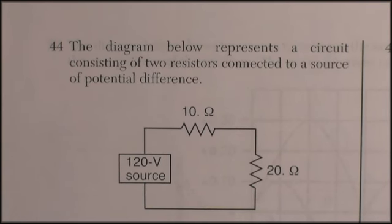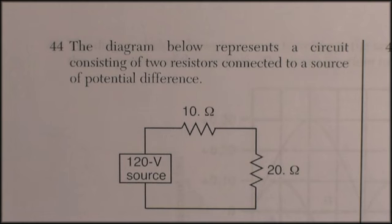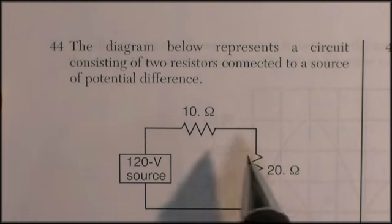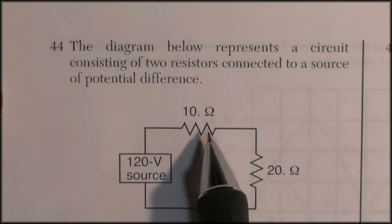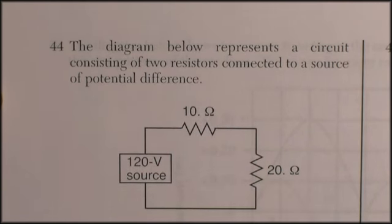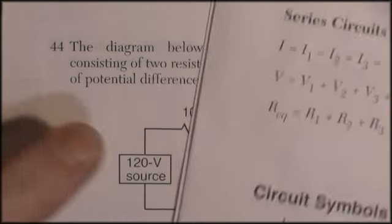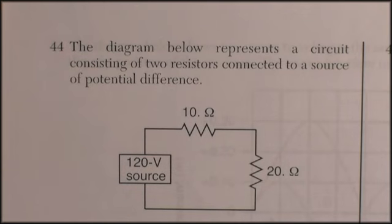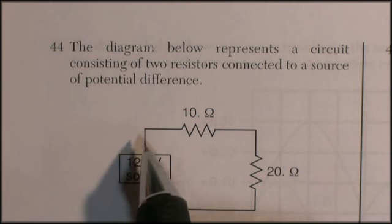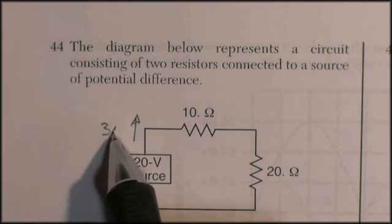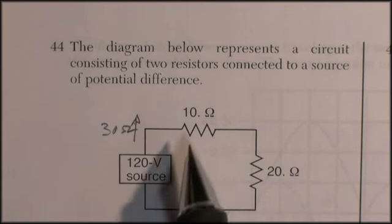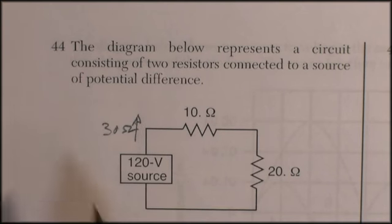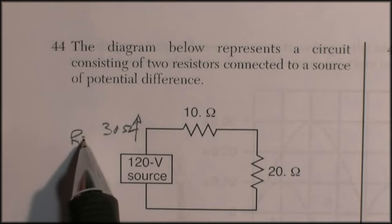We're going to the electricity ones. Question 44: the diagram below represents a circuit consisting of two resistors connected to a source of potential difference. The first thing you need to realize is that the two resistors are connected in series, and resistors in series add. So a 10 ohm and a 20 ohm resistor are the same as a 30 ohm resistor. This voltage source sees a total resistance of 30 ohms.